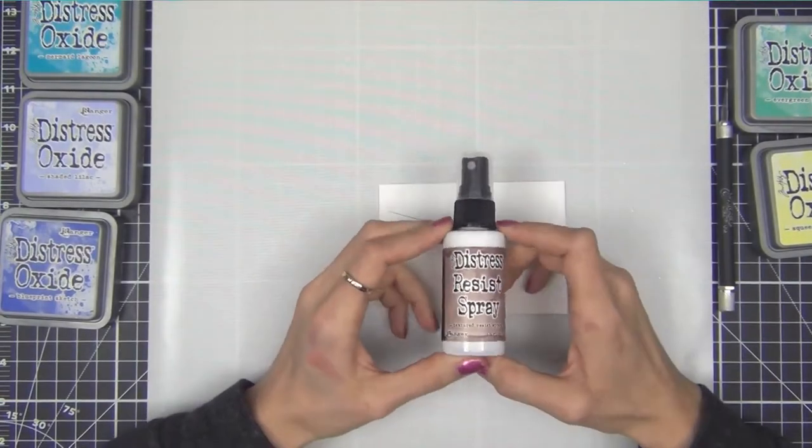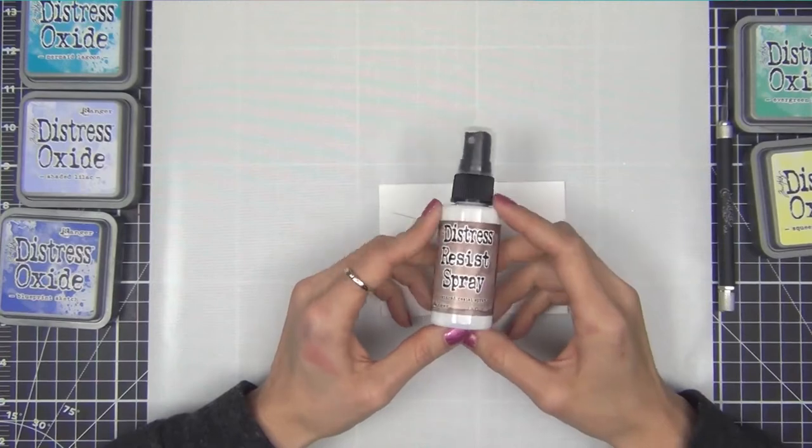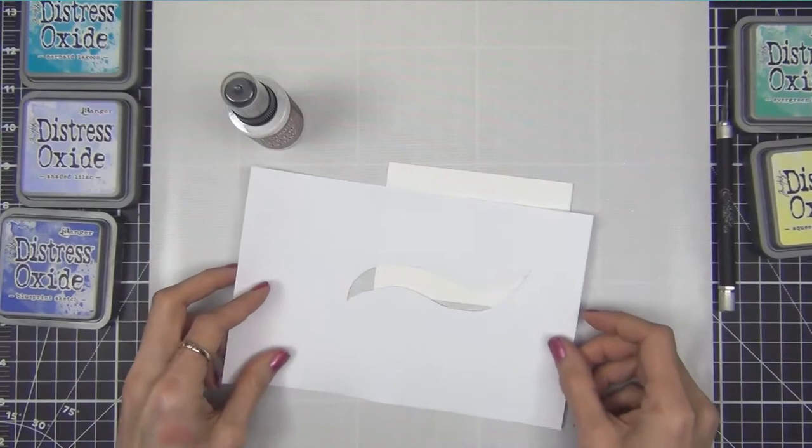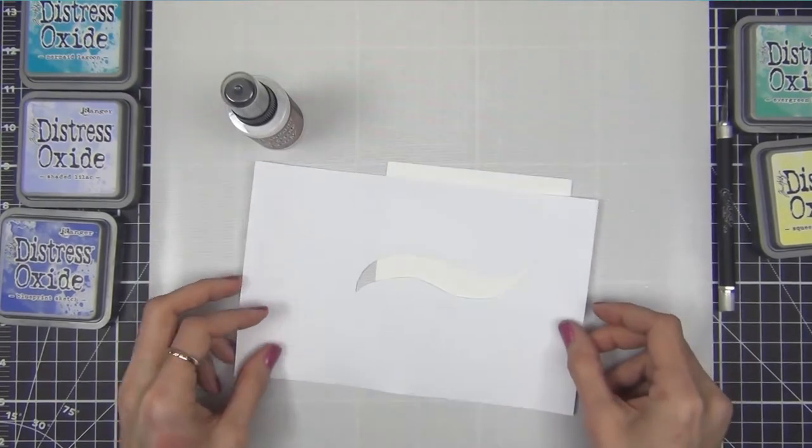So here's the Distress Resist Spray. When I made this card I was just experimenting with this stuff. It basically adds a bumpy texture and resists any ink you put over it when you wipe it off.